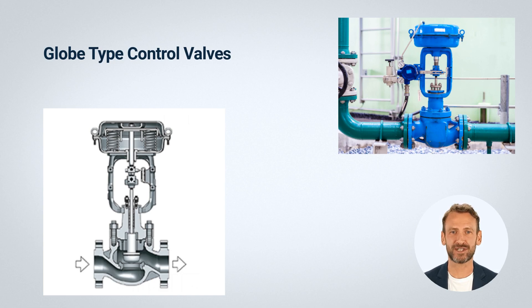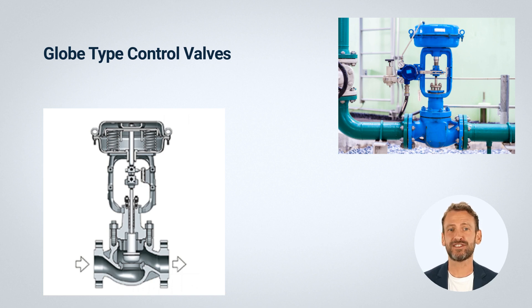Flow characteristics: globe valves typically have a higher pressure drop than other types of valves, which can make them less efficient in some applications. However, they also offer precise control over flow rates, making them ideal for applications that require accurate flow regulation.